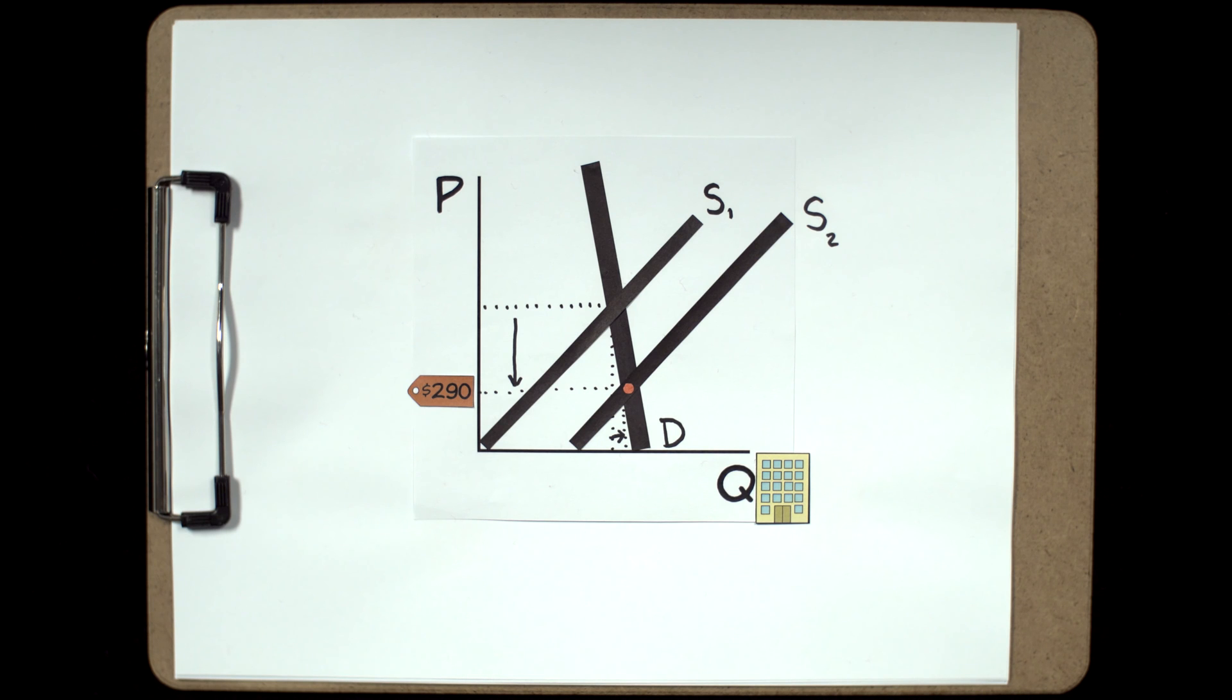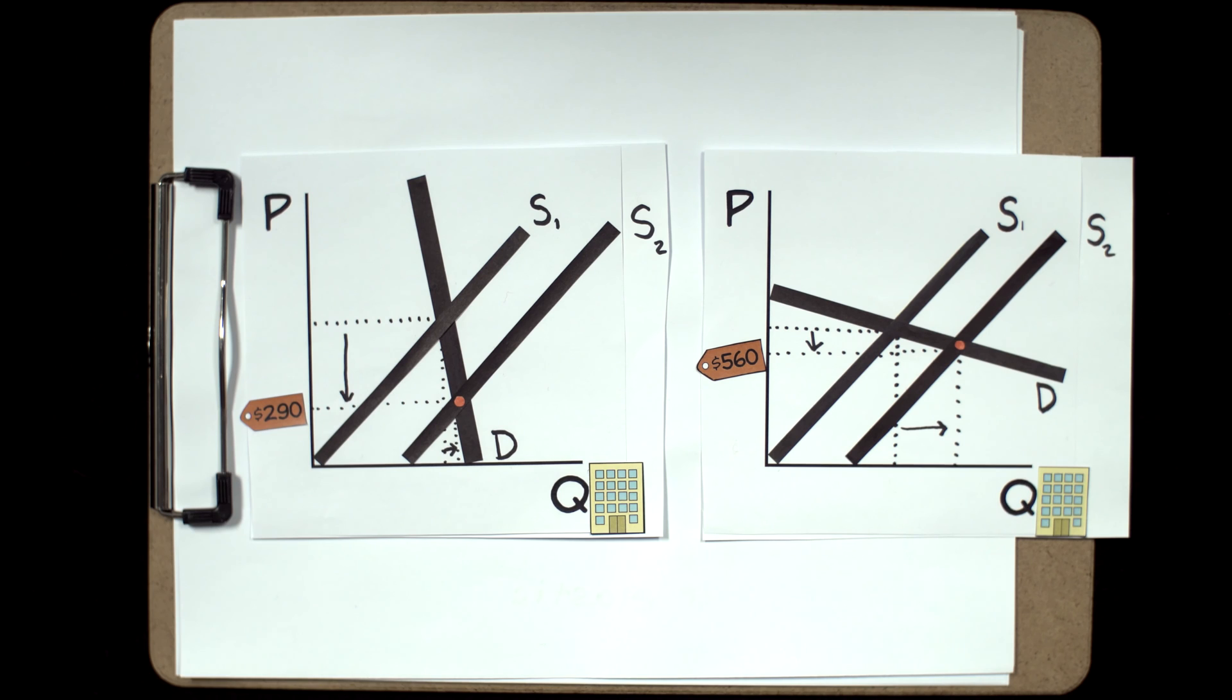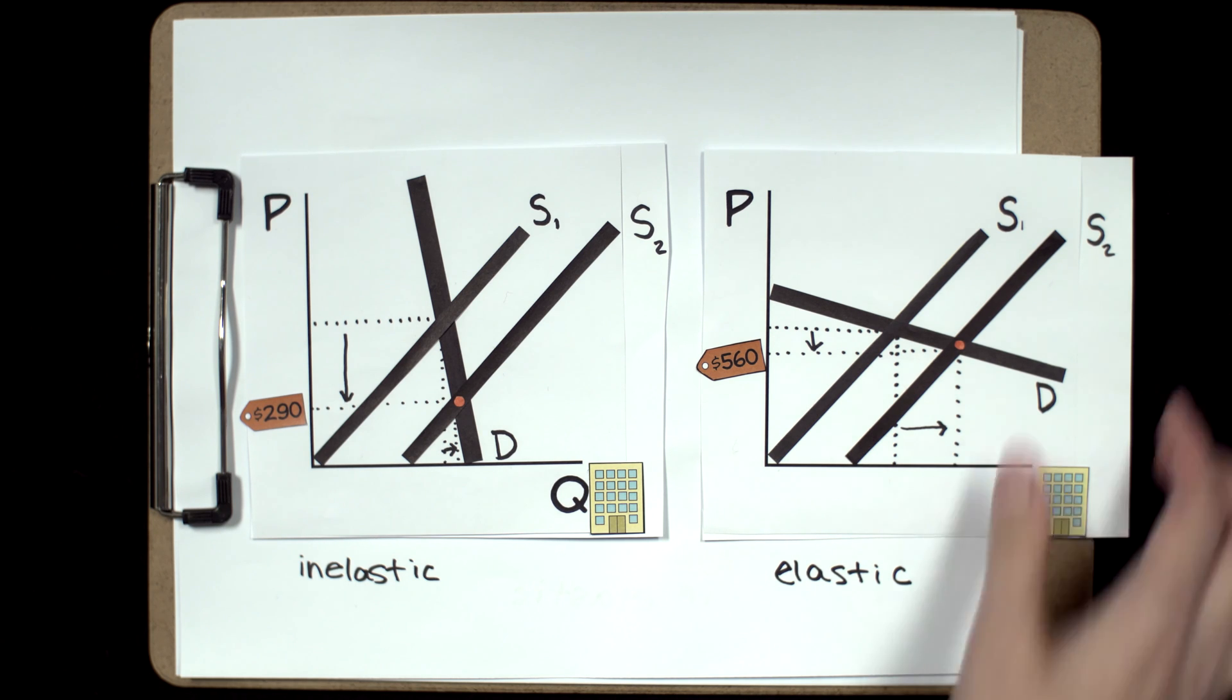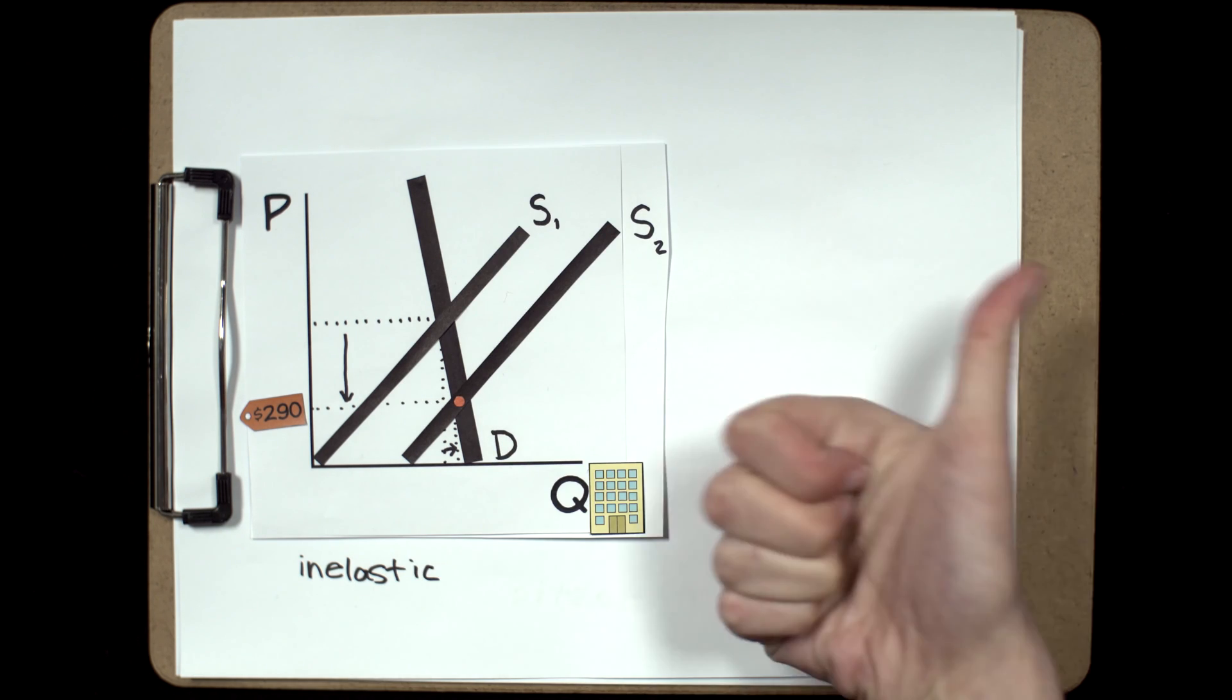Now this is great news for college kids and any renters out there. If we compare this to the price drop from our elastic demand curve, it's much lower. So if you're a student hoping to pay the lowest rent possible, you'd hope for an inelastic demand curve in this case.